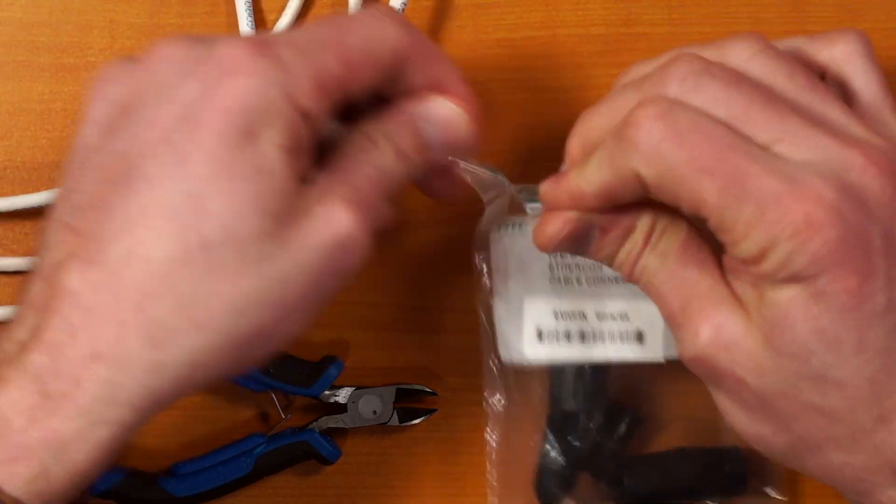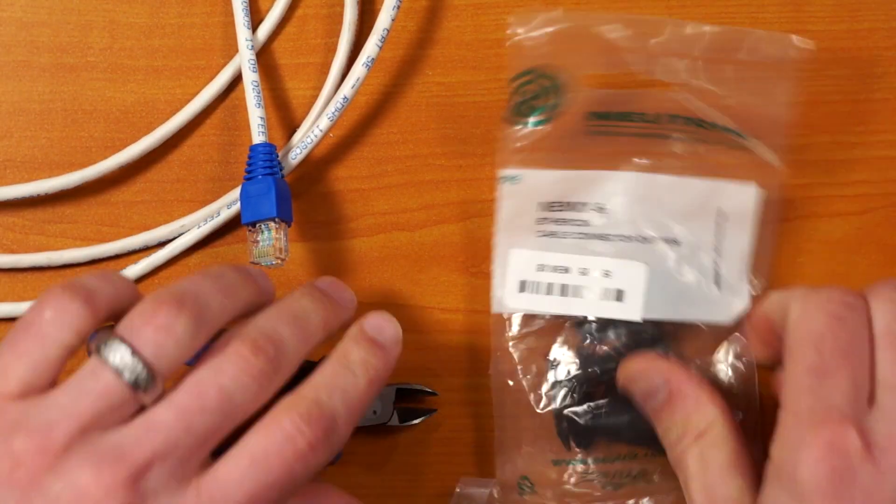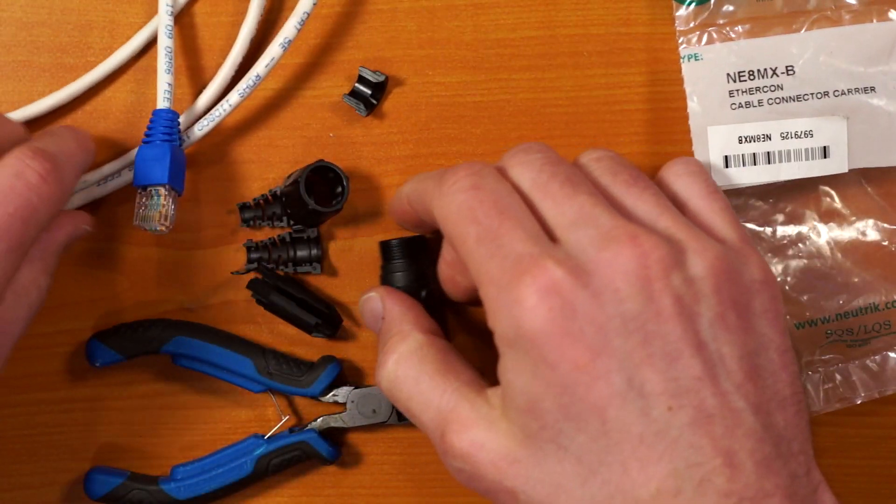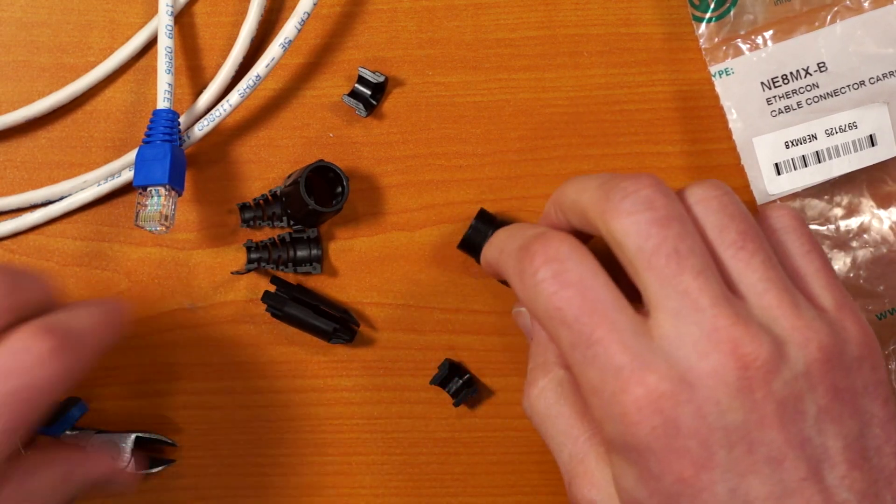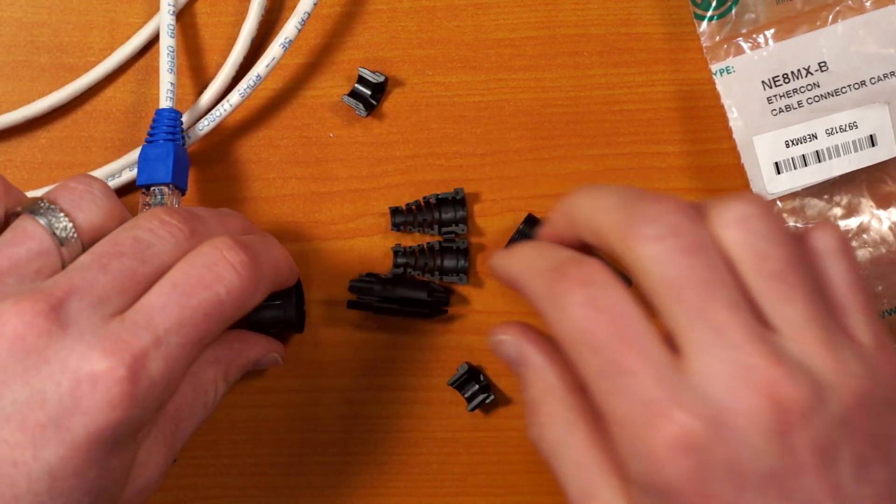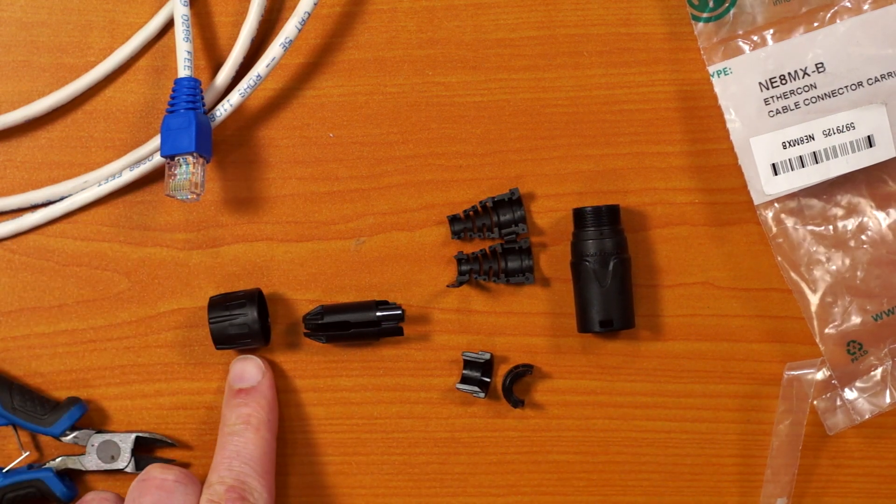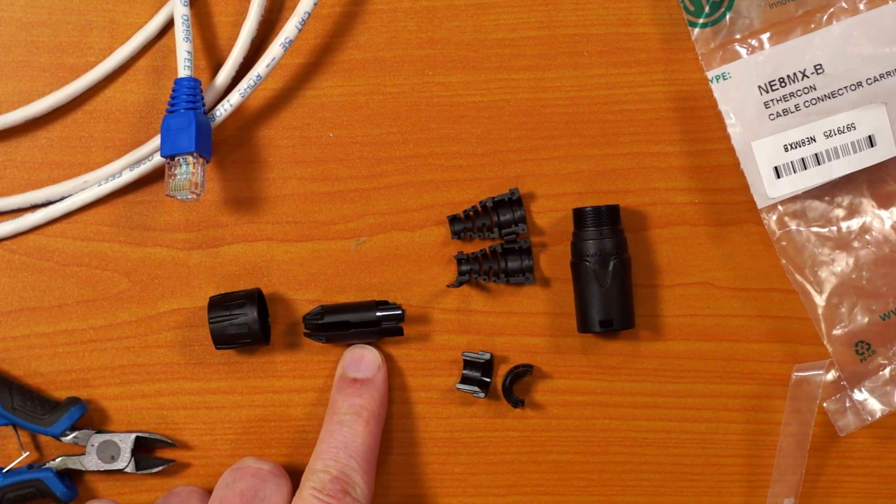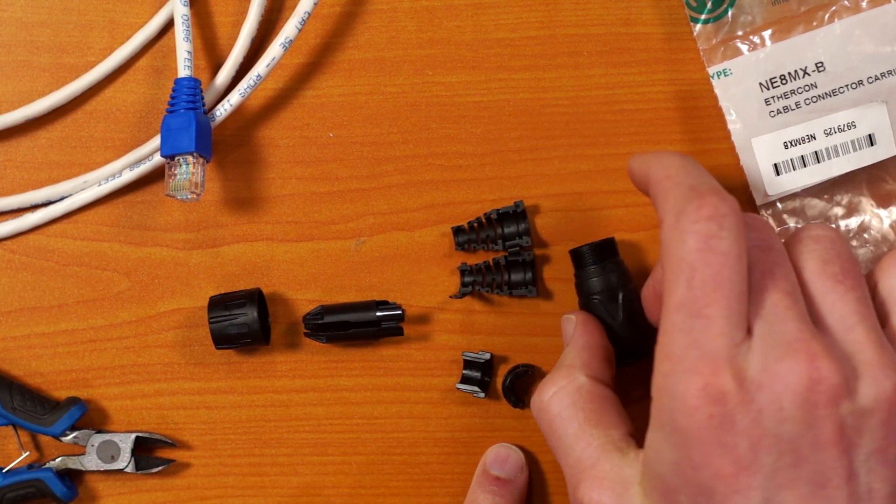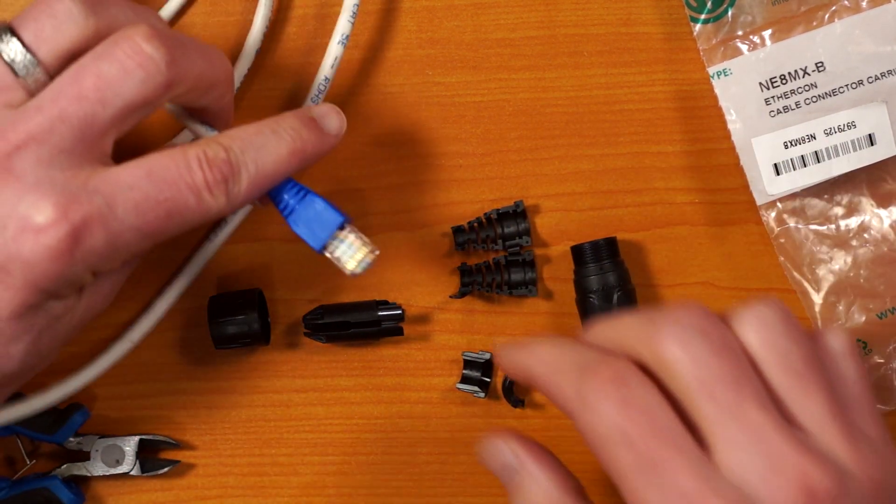So I'm just going to show you the different parts here. There's four main parts and one has kind of two different versions. So we have the bushing, the chuck, there's two versions of the boot, and then the housing.